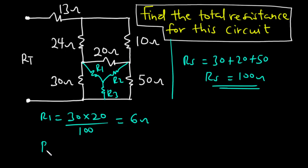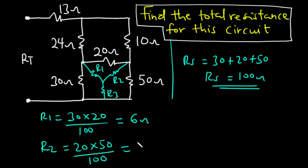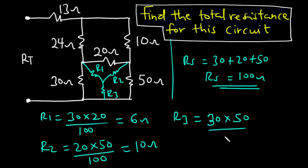For R2, it is 20 times 50 divided by 100. Now 20 times 50 divided by 100 is equal to 10, so R2 equals 10 ohms. For R3, it is going to be 30 times 50 divided by 100.